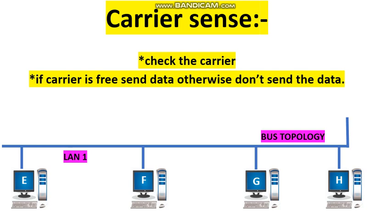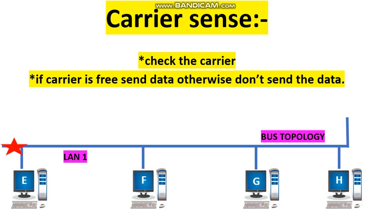Let us assume that at this particular time, E senses the carrier and finds that the carrier is free. So it will access the medium and send the data. In the next case, if E senses the carrier and finds that the carrier is not free, it will not send the data. In CSMA/CD, any station can send data at any time, but before sending, it should check the carrier — if free, it sends; otherwise, it does not.